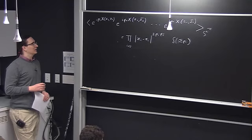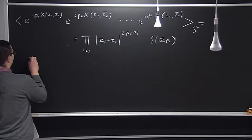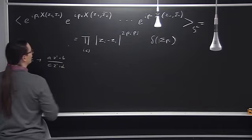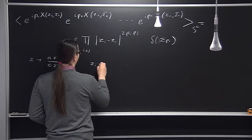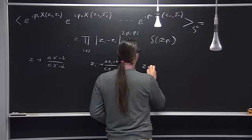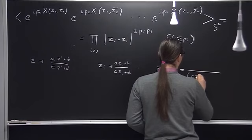One exercise you can do is to check that this answer is invariant under a Möbius redefinition z → (az' + b)/(cz' + d). This maps each z_i to (az_i + b)/(cz_i + d), which means differences z_i - z_j go to something involving factors of (cz_i + d)(cz_j + d), and then there are cross terms that essentially give you something like (ad - bc)(z_i' - z_j').